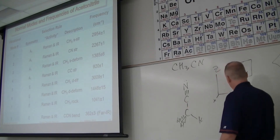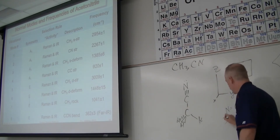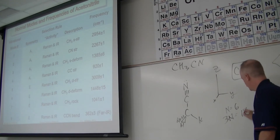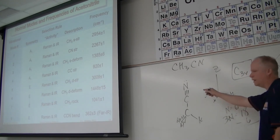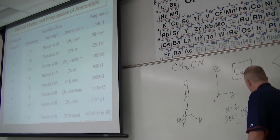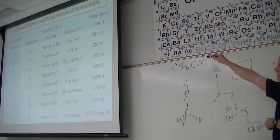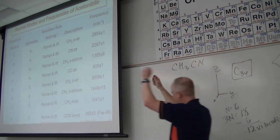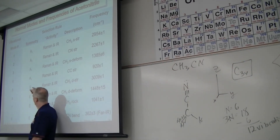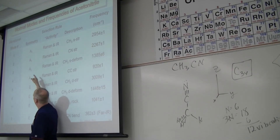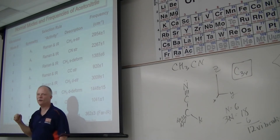So how come I only have eight frequencies shown? Because some are doubly degenerate E modes — there are two for each of those. Counting: two, four, six, eight, nine, ten, eleven, twelve. We get them all! We're going to see all of them but one — ν₈ at 362 wavenumbers, which is below the cutoff of our KBr windows.